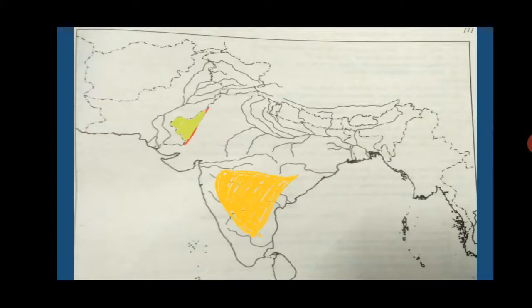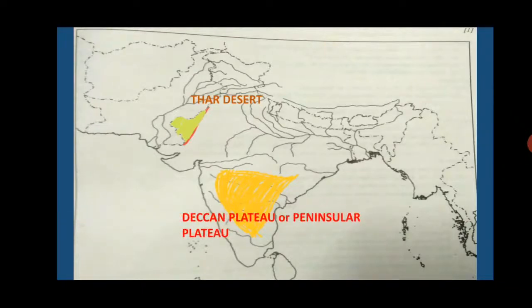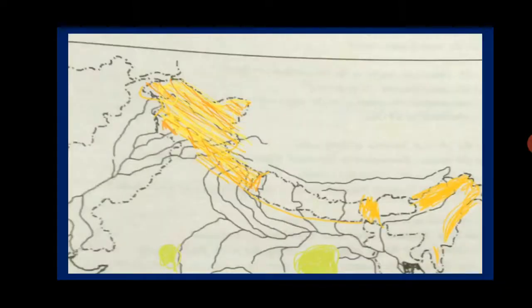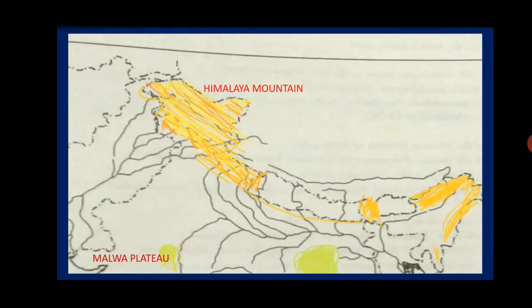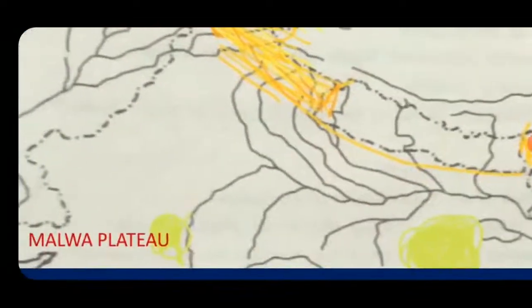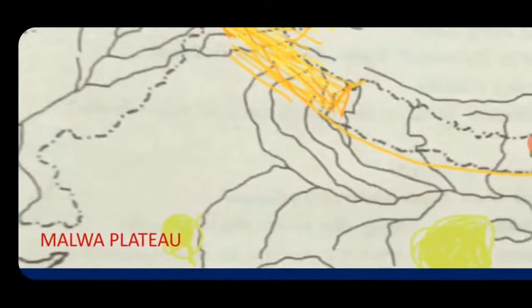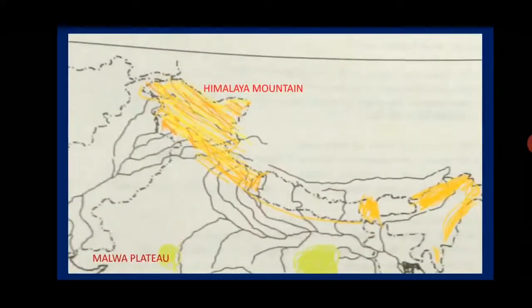Here you have to mark the Thar Desert. The western edge of India is the Thar Desert. In between the western and eastern sides is the Deccan Plateau, also known as the Peninsular Plateau. Above that is the Himalayan mountain, shaded in yellow. Then there is the Malwa Plateau on the western side of the Chambal River, and the Chhota Nagpur Plateau on the western side of the Damodar River.